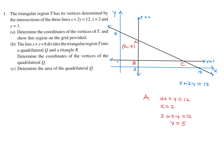Point B is the easiest — it's the intersection of x equals 2 and y equals 1, so B is (2, 1). Point C is the intersection of x plus 2y equals 12 and y equals 1. Substituting y equals 1 gives x equals 10, so C is (10, 1). That completes Part A.